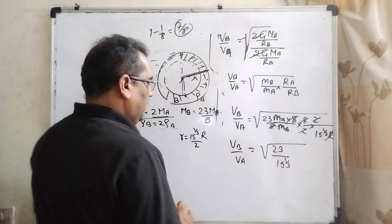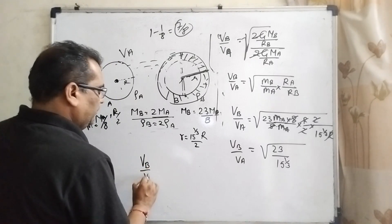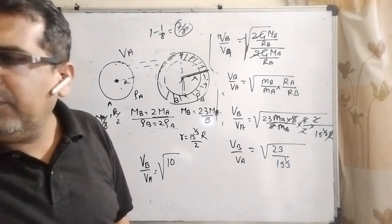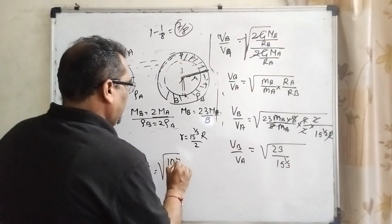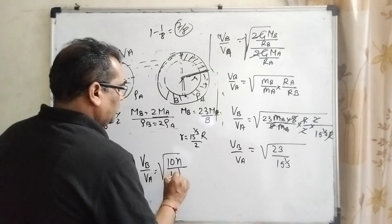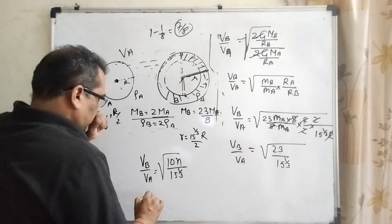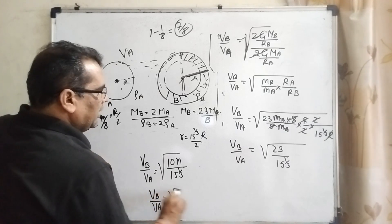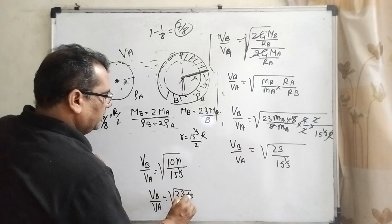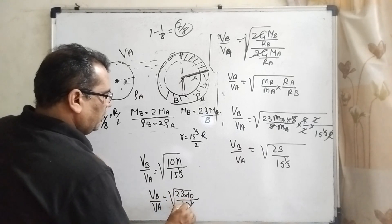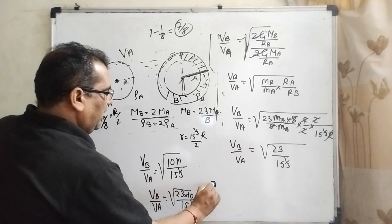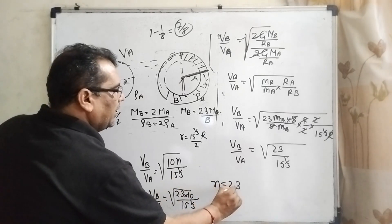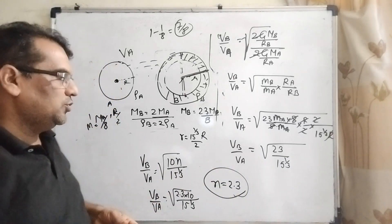Now compare what you have given. Vb upon Va equals root of 10N upon (15)^(1/3). By comparing, it can be written as 2.3 times 10 upon (15)^(1/3). So here N is, what is the value of N? It is 2.3. So its value is 2.3.